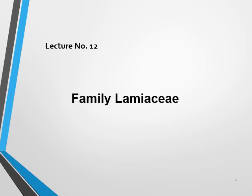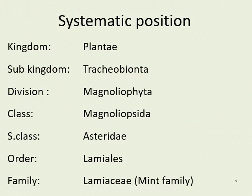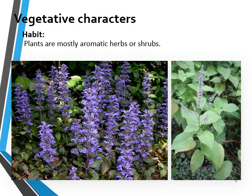The topic is Family Lamiaceae. First of all, we discuss the taxonomic description of Lamiaceae. The kingdom is Plantae, the sub-kingdom is Tracheobionta, this family belongs to division Magnoliophyta, the class is Magnoliopsida, the subclass is Asteridae, and the order is Lamiales.